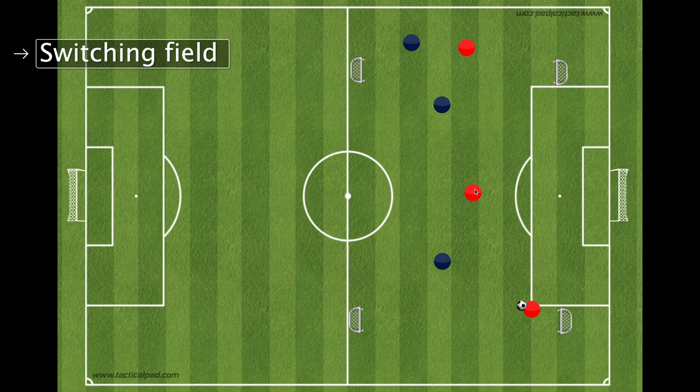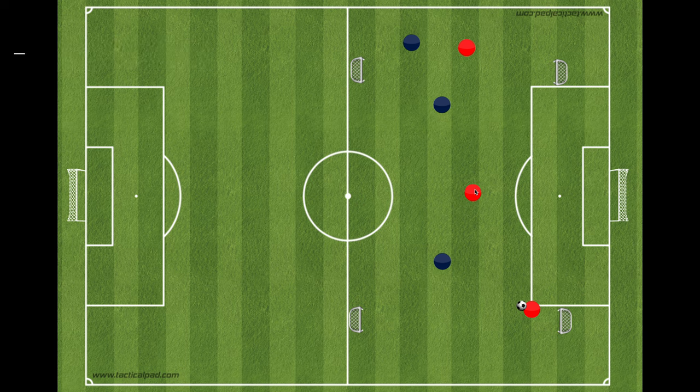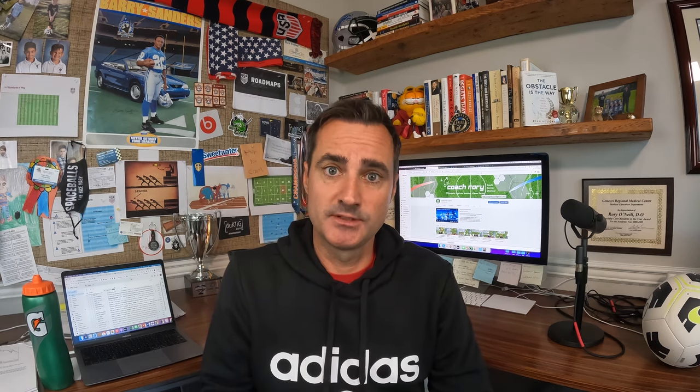The concept of switching the point of attack is really critical. By having a four-goal game, it gets players to get their head up and scan — they can say 'if this goal is closed, we'll take it to the other side.' The coaching points here would be: 'Get your head up! Can we switch? Is it closed?' — again, trying to coach in the flow of the game.